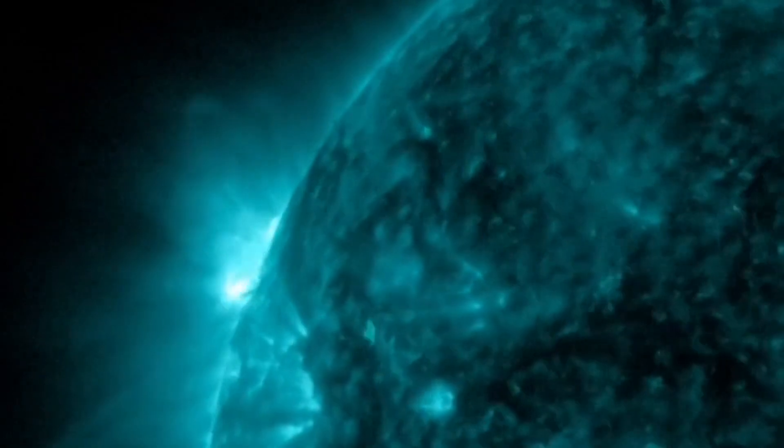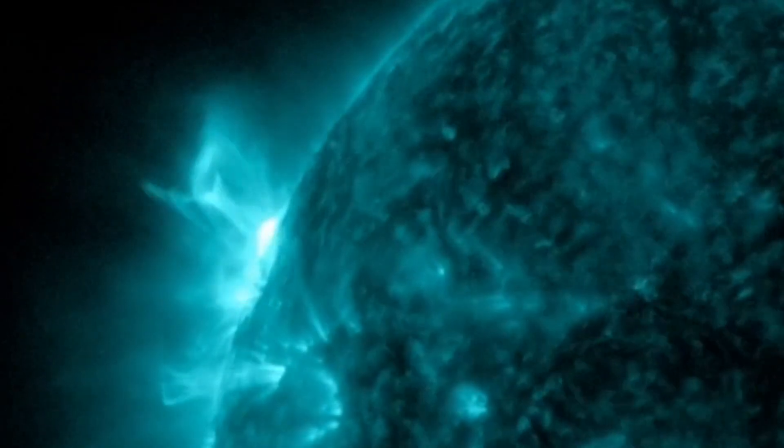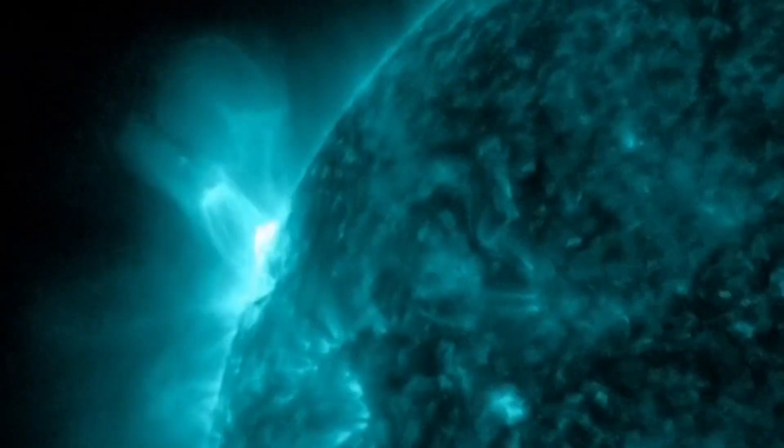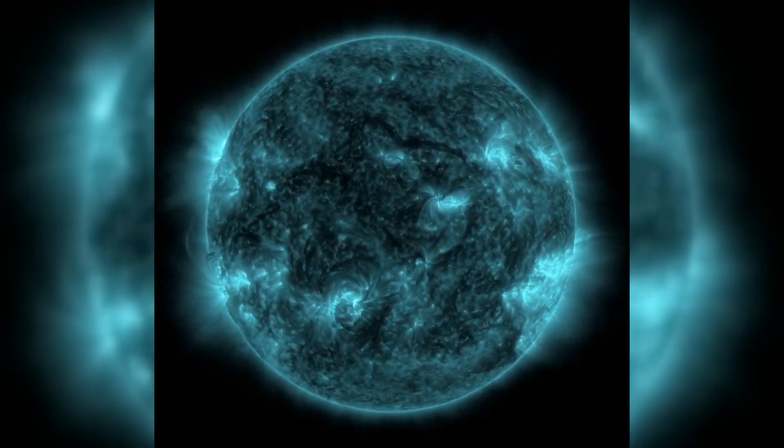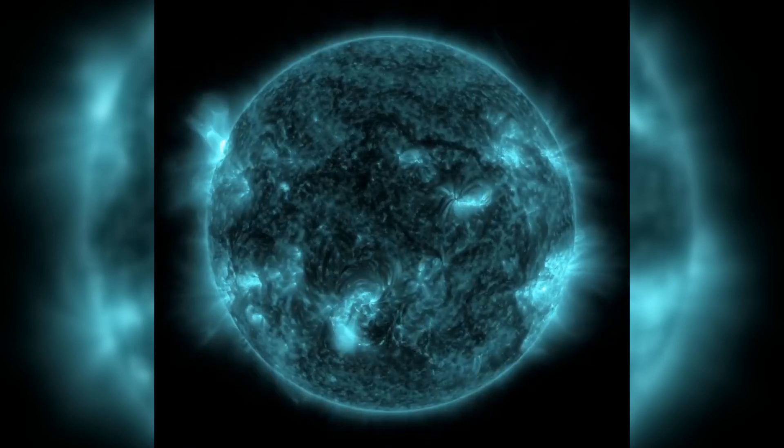On July 11 at 1808 UTC, an M6-class explosion occurred. This solar flare was so powerful that it even saturated pixels in NASA's Solar Dynamics Observatory.